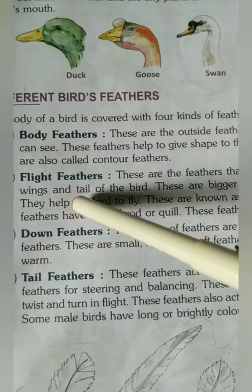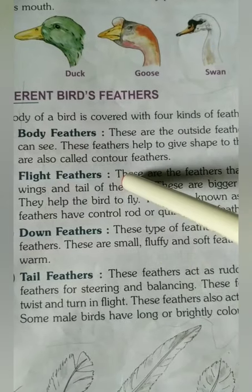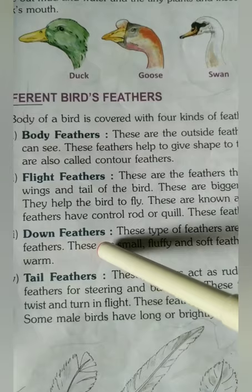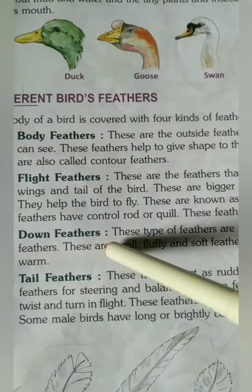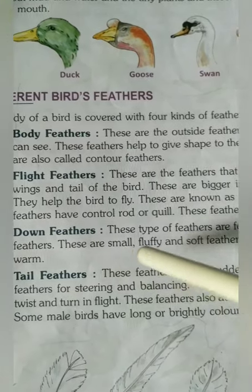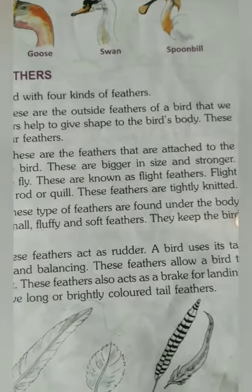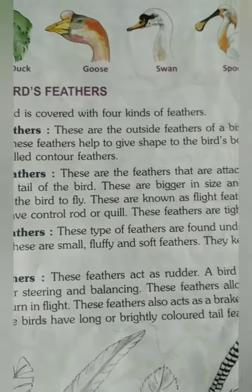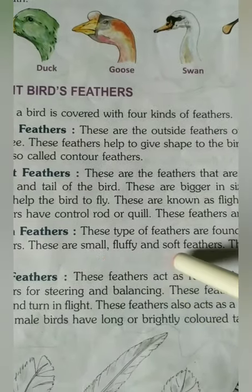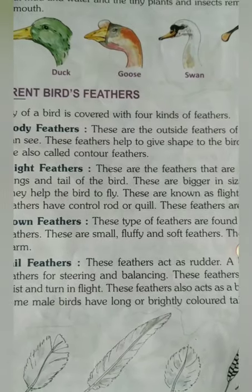The second one is flight feathers — the feathers which help the bird to fly in the sky. The third one is down feathers. These feathers are found under the body and are small, fluffy, and soft, and they help the bird to keep warm.